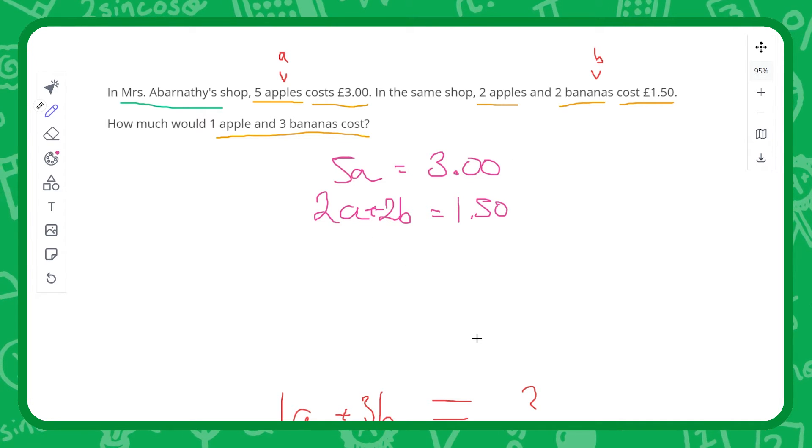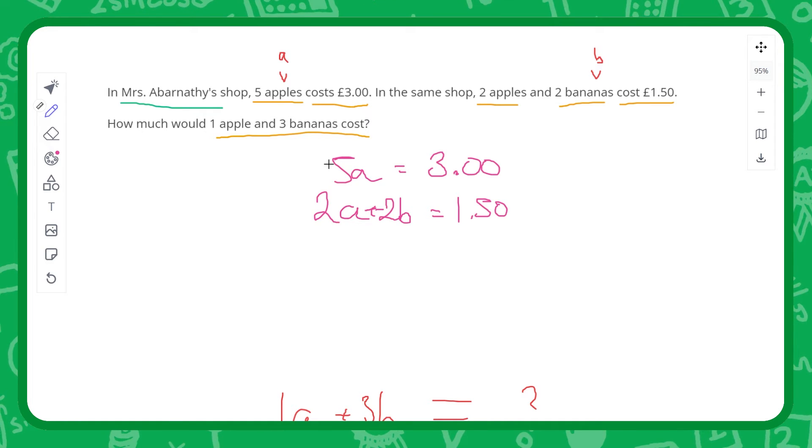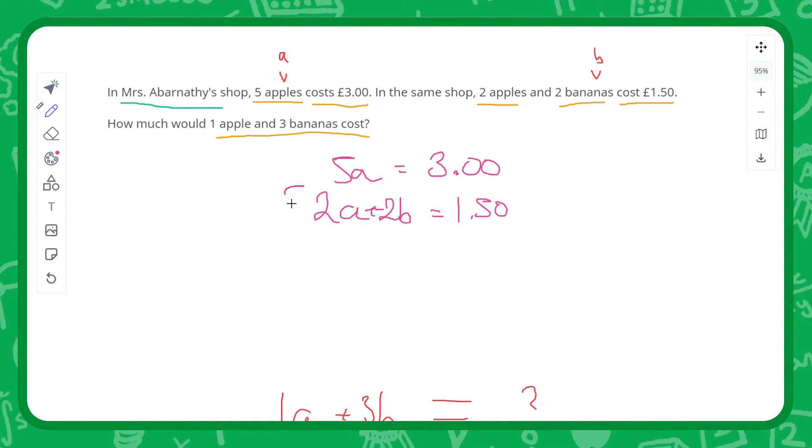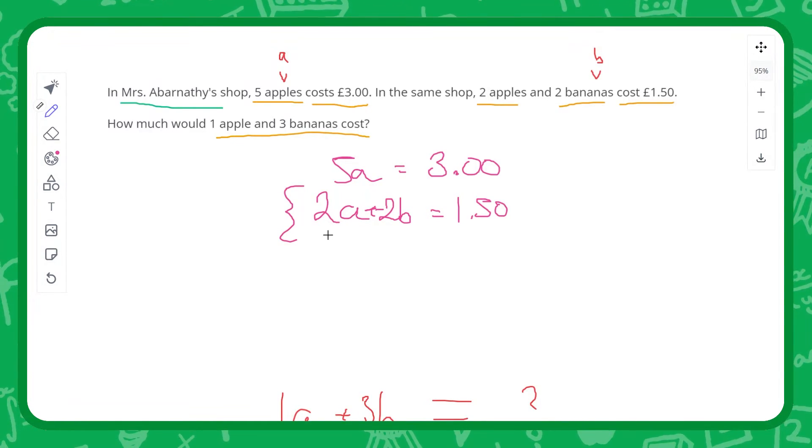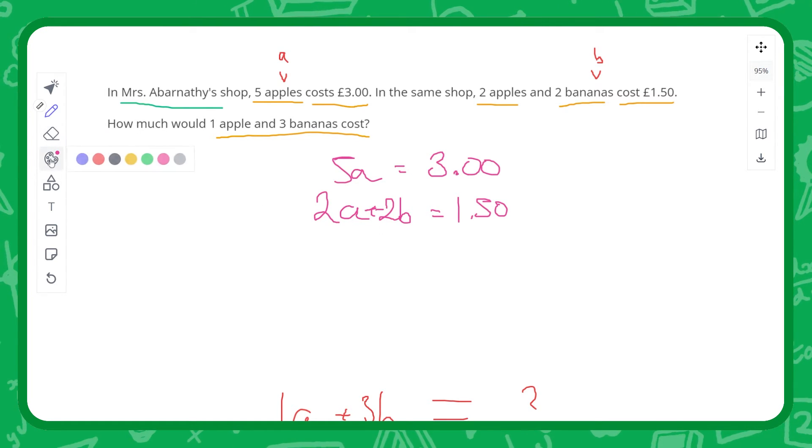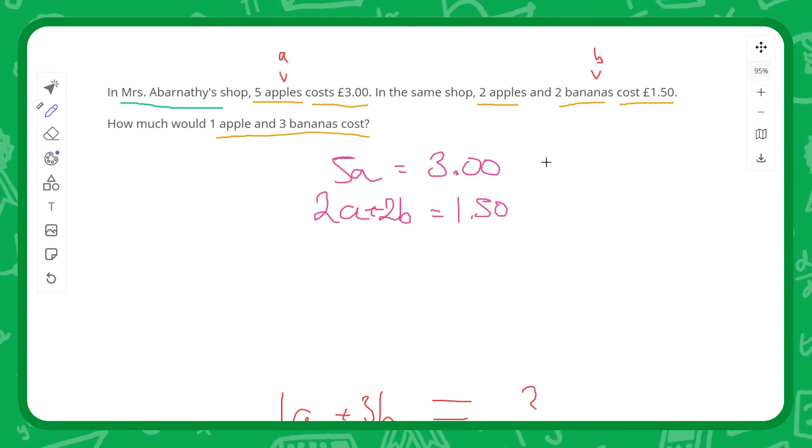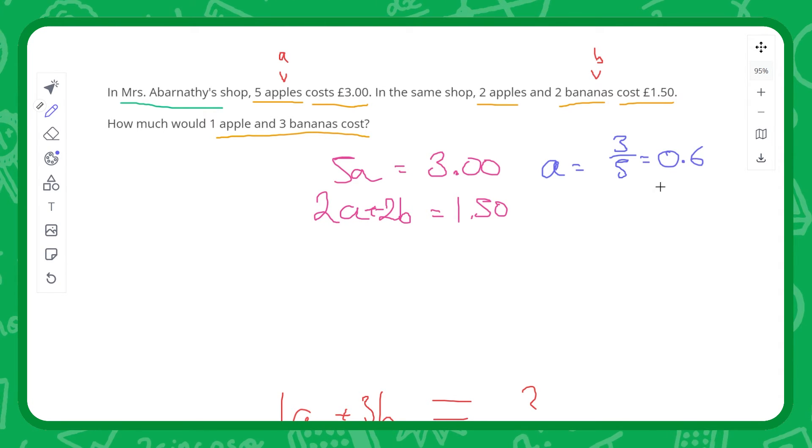Now we need to get a and/or b on its own, and this is where we use the power of the equal sign. There's a couple of ways that you can end up doing simultaneous equations. We could multiply this one down here by 2.5, which would make it all equal to 5a. However, what I tend to do is make things equal to one quantity first, so that can make our lives easier. So a is going to be equal to 3 over 5, which in this case is 0.6 pounds, so that's 60 pence.